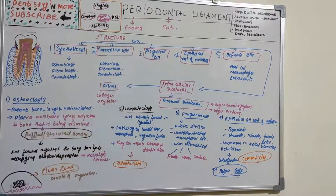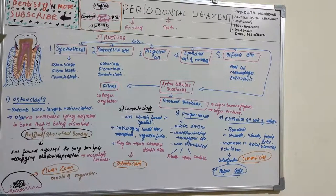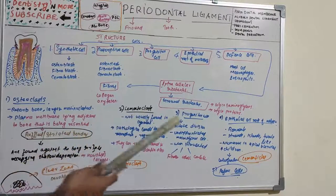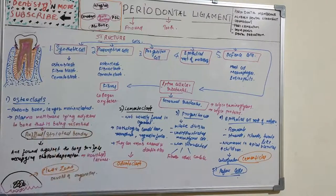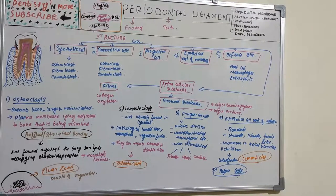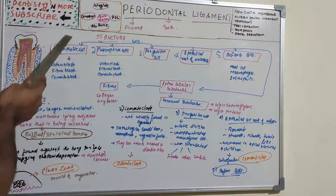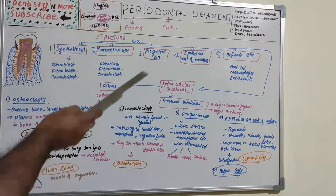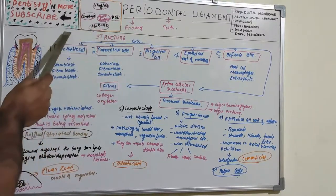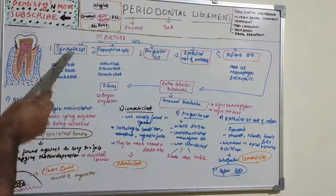Progenitor cells — all connective tissue including PDL contains progenitor cells that have the capacity to undergo mitotic divisions. These are undifferentiated mesenchymal cells with a perivascular location within around 5 micrometers of blood vessels. When stimulated appropriately these cells undergo mitosis to form fibroblast, osteoblast, or cementoblast, which in turn produce collagen, bone, and cementum. Progenitor cells are thus the synthetic cells of synthetic cells.